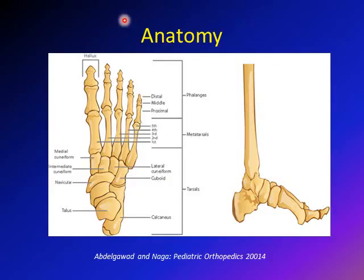Let's start with the anatomy of the fifth metatarsal. Here is the fifth metatarsal — this is the small toe — and this is the base of the fifth metatarsal. Here you will have the attachment of the peroneus brevis, which comes from the lateral side and inserts into the lateral side of the fifth metatarsal. Sometimes with an inversion injury there can be an avulsion of part of the bone.